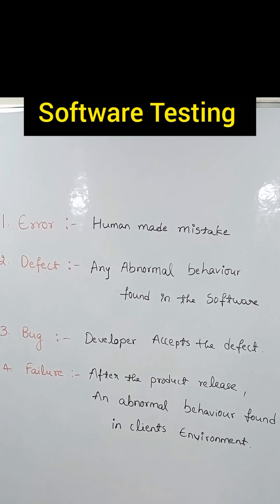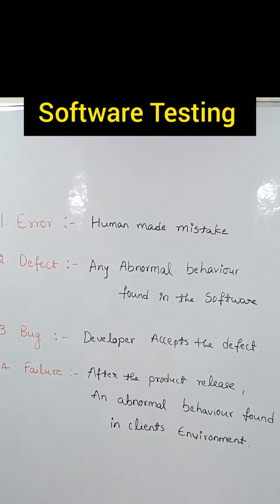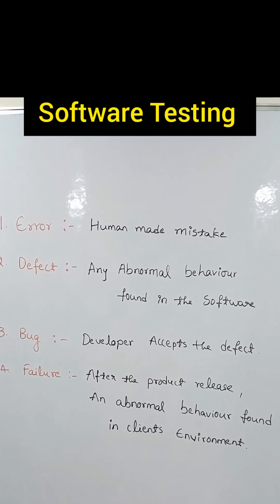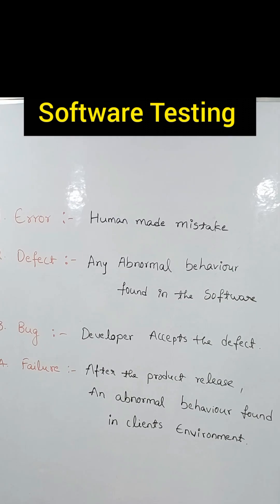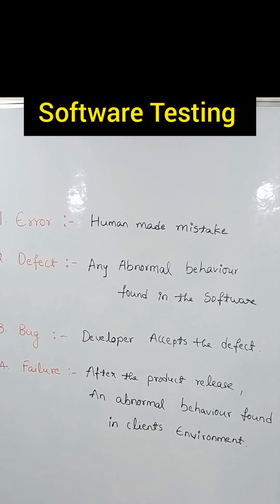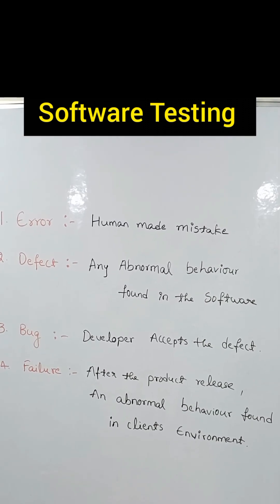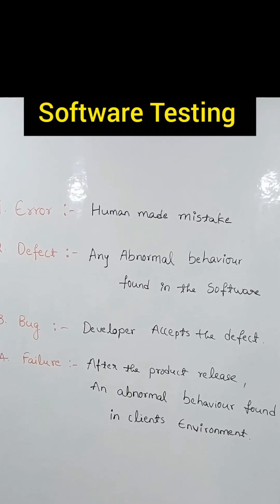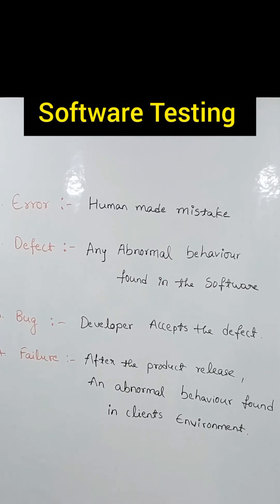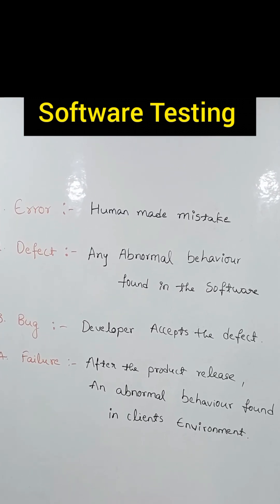After the developer accepts the defect and we call it a bug, the next term is failure. After the product is released, any abnormal behavior found in the client's environment — in that situation, we call it a failure.